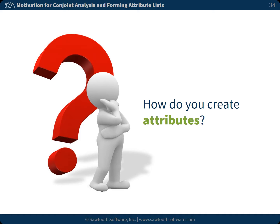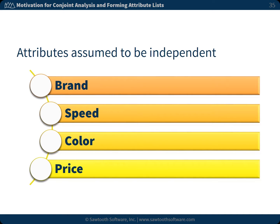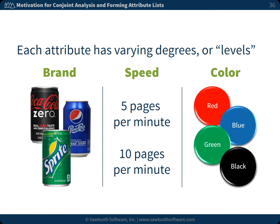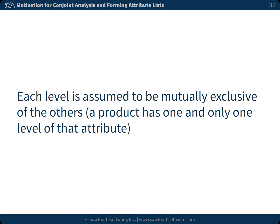How do you create attributes? Well, attributes are assumed to be independent, such as brand, speed, color, price, and so on. Each attribute has varying degrees or levels. For example, the attribute brand could include Coke, Pepsi, and Sprite. The attribute speed could be 5 pages per minute or 10 pages per minute. The attribute color could include red, blue, green, and black. Each level is assumed to be mutually exclusive of the others, so a product has one and only one level of that attribute.